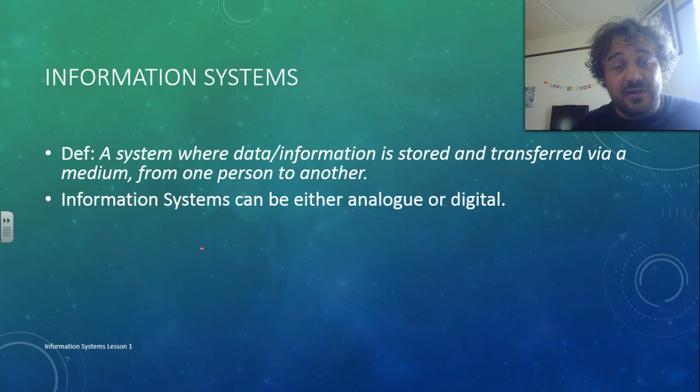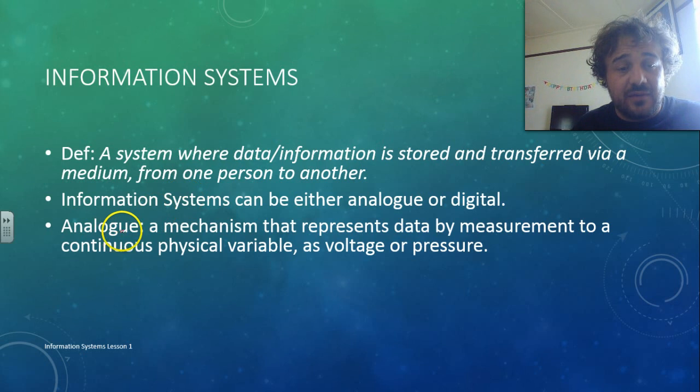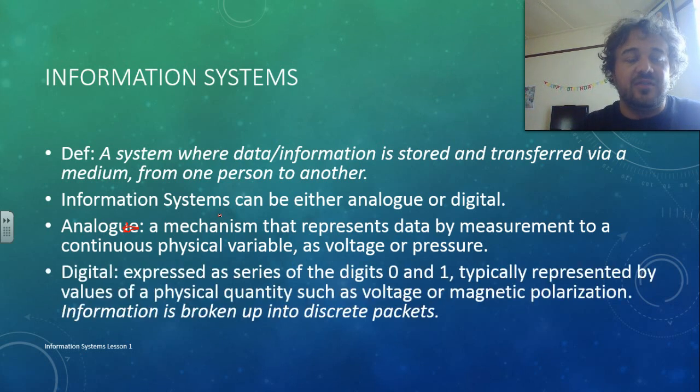So, they can either be analog or digital. So analog is a mechanism that represents data by a continuous physical variable, it could be voltage, a wave, pressure, so it's continuous, it's that perfect wave shape, so it's continuous. Whereas digital is broken up into discrete packets, often, in this case, ones and zeros, if it's using a computer. Yeah, so digital means it's split into discrete packets of on or off, and there's no in-between variables.